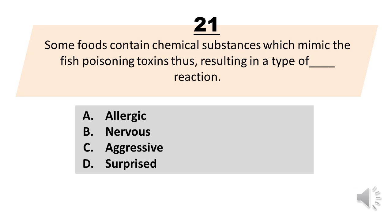Some foods contain chemical substances which mimic the fish poisoning toxins, thus resulting in a type of blank reaction. A. Allergic. B. Nervous. C. Aggressive. D. Surprised. The correct answer is Letter A, Allergic.